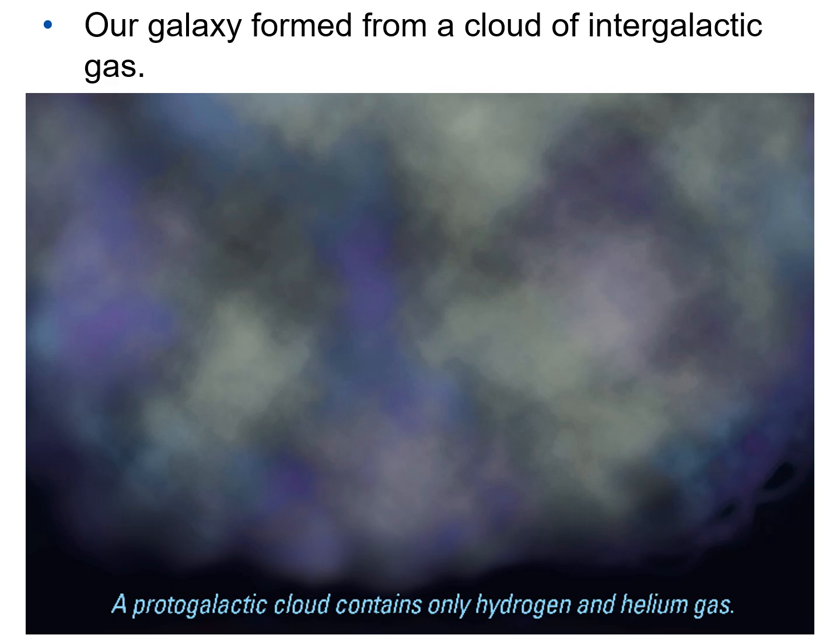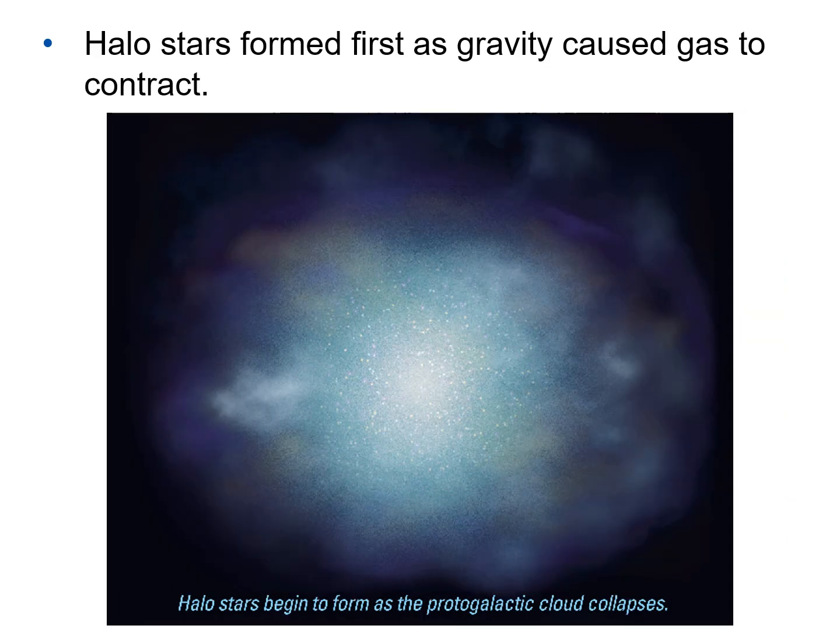We're talking about the early universe before there were galaxies. Halo stars begin to form as the protogalactic cloud collapses due to gravity — just the same as a protostellar cloud collapses to become a star system with a star and planets. As this protogalactic cloud collapses, before it collapses too much, stars start to form. These will eventually be the halo stars.